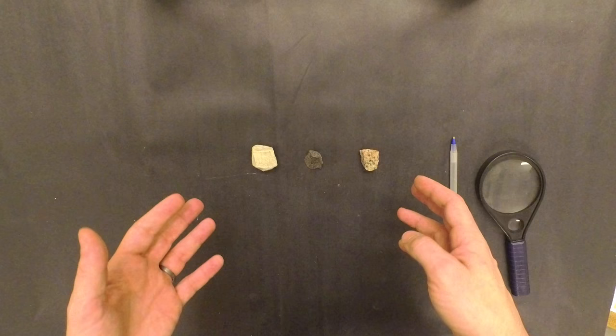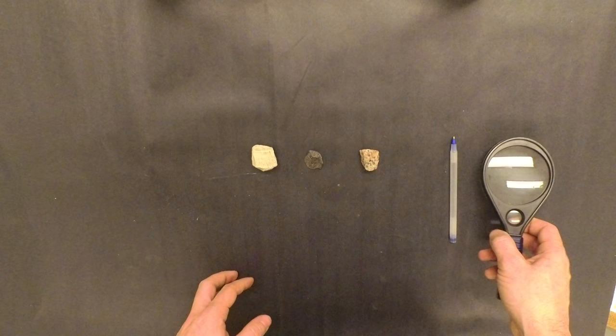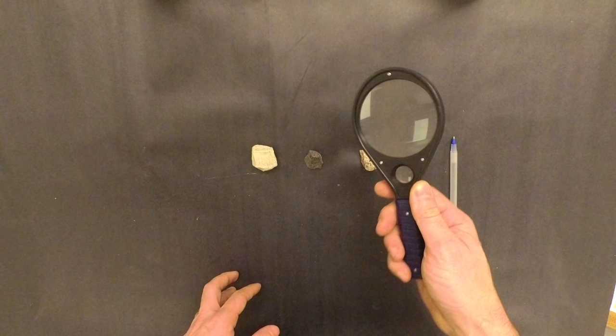In this video, we'll be looking at how to determine the grain or crystal size of the rock that you are studying. One of the most important tools you will be using here is this. This is called a magnifying glass or a hand lens.